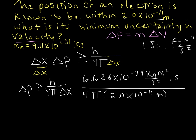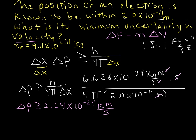Now let's cancel units. The seconds squared cancels, and one of the meters cancels with the meters in the denominator, leaving us with kilograms times meters per second — which are exactly the units for momentum. Running all those numbers, we get 2.64 times 10 to the negative 24 kilograms meters per second. That's our uncertainty in momentum.